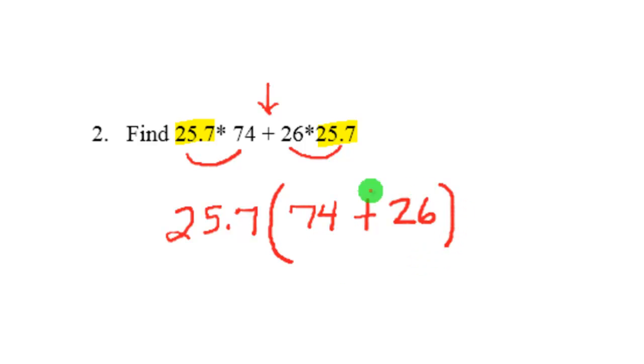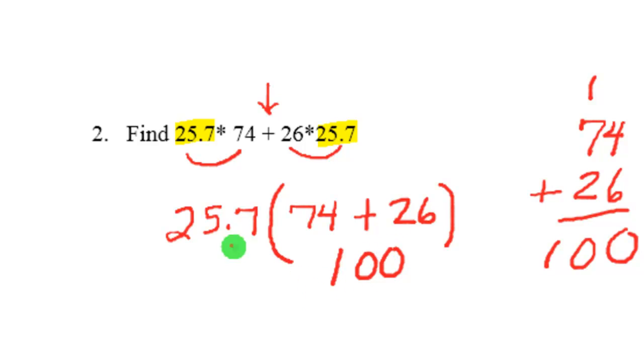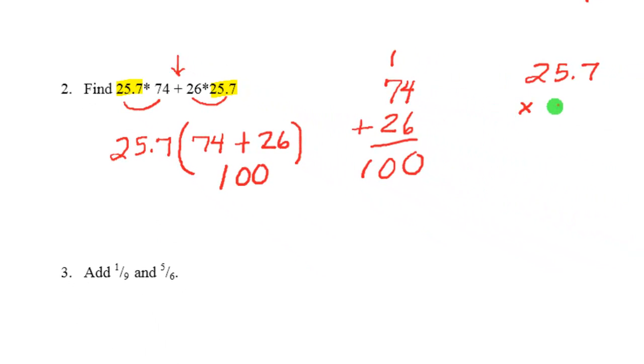You see how we took out one 25.7 that they had in common, and then put a parenthesis, and then put inside the other two numbers that were being multiplied times the 25.7. Now with order of operations, you do your parenthesis first. So you're going to add 74 plus 26. So 4 plus 6 is 10, carry 1, 1 plus 7 is 8 plus 2 is 100.